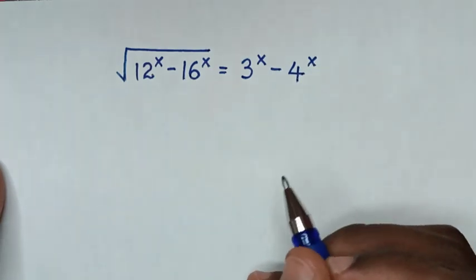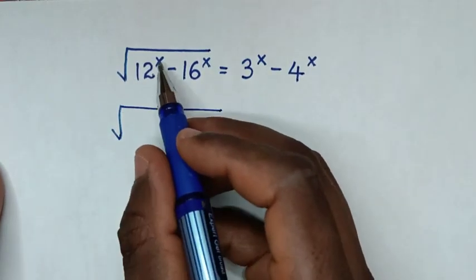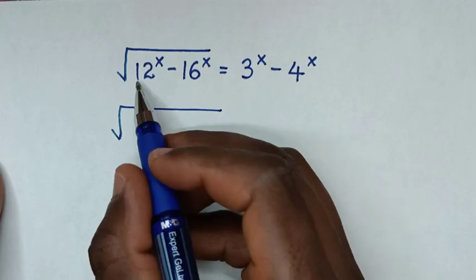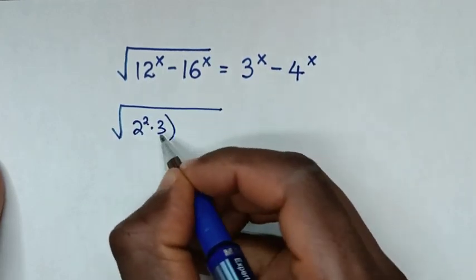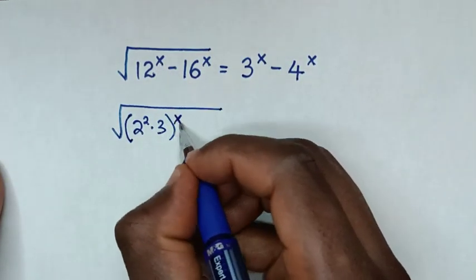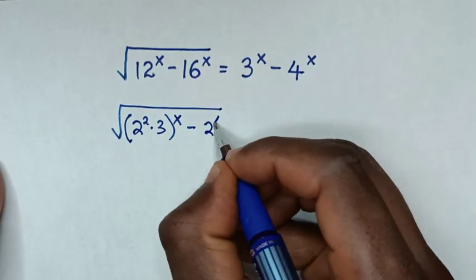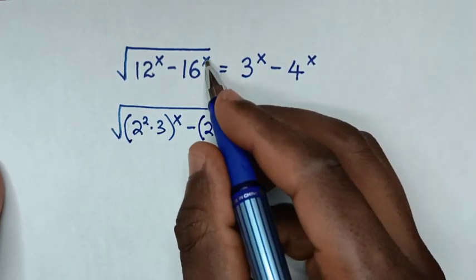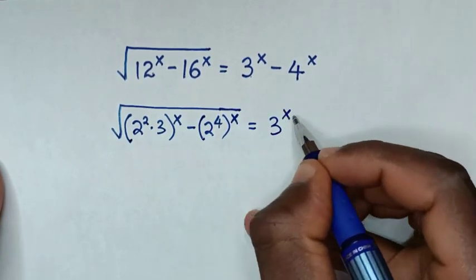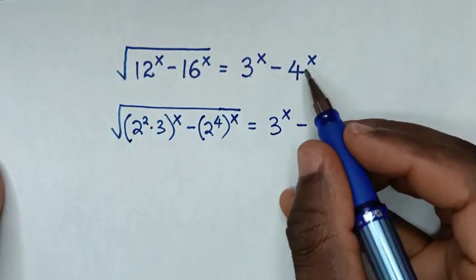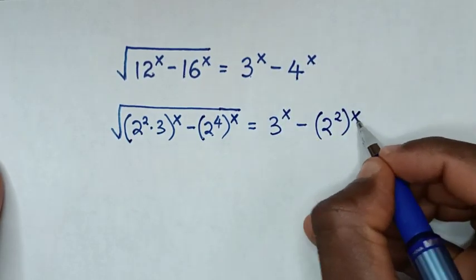Inside the square root, 12 is the same as 4 times 3, and 4 is 2 squared, so we have (2² × 3)^x. Then minus 16^x, where 16 is 2 to the power of 4, so it is (2⁴)^x. On the right side, 3^x minus 4^x, where 4 is 2 squared, giving (2²)^x.